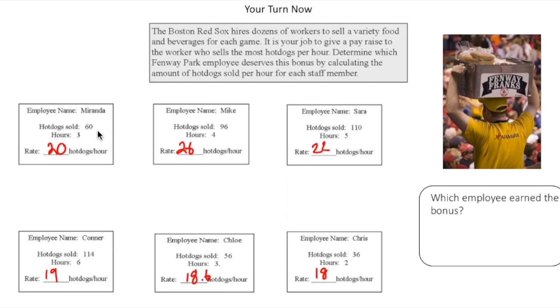Miranda, she sold 60 hot dogs in three hours. So her rate was 20 hot dogs per hour. And because it's per one hour, remember that's unit rate. Mike sold 26 hot dogs per hour. And the way I got that is I did 96 divided by four. Sarah sold 110 hot dogs in five hours. So her rate was 22 hot dogs per hour. Connor sold 114 hot dogs in six hours. So that's 19 hot dogs per hour. Chloe sold 18.6 hot dogs per hour. And then finally, Chris sold 18 hot dogs per hour.